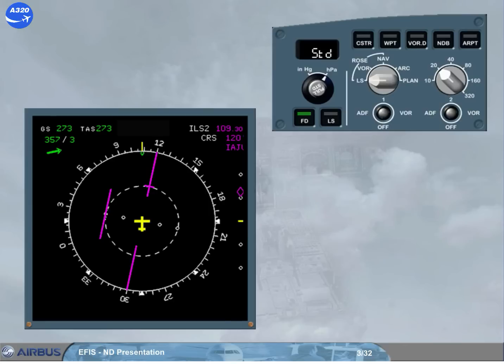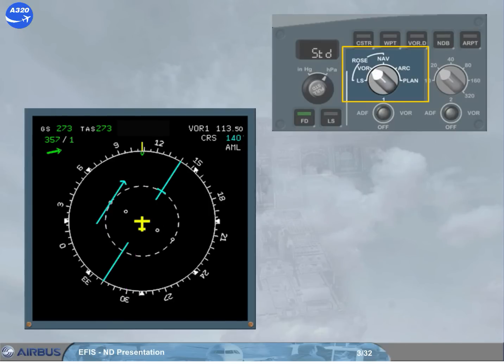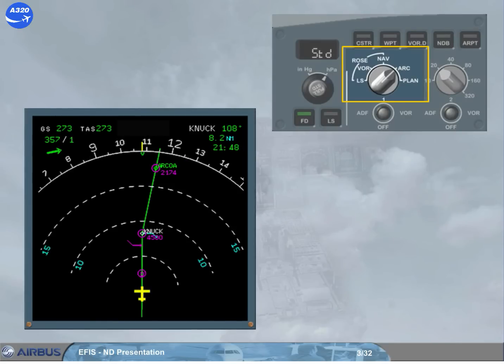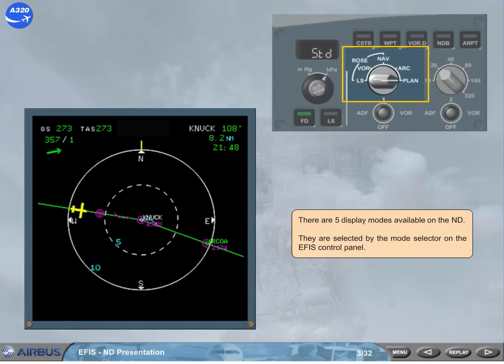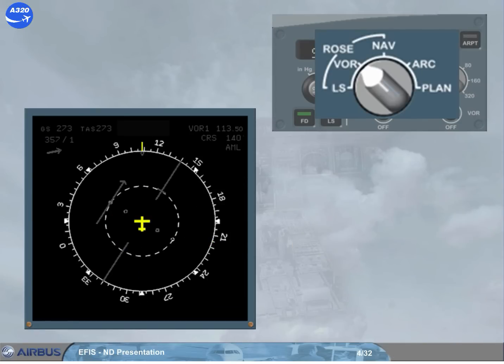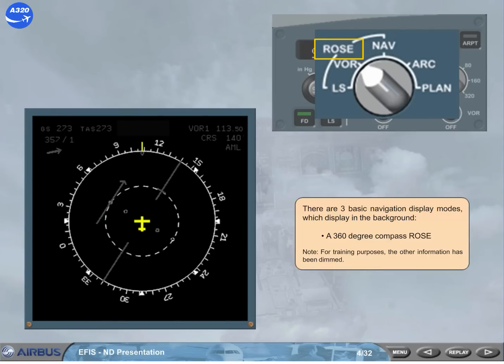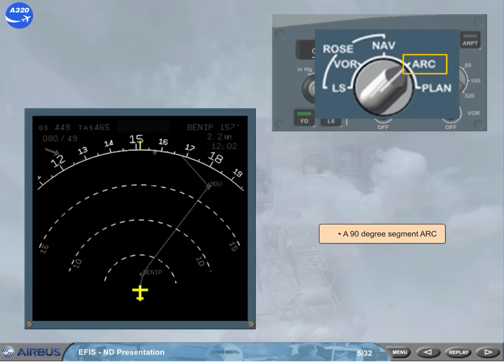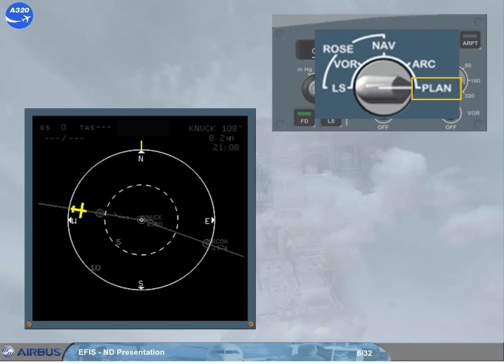There are five display modes available on the ND. They are selected by the mode selector on the EFIS control panel. There are three basic navigation display modes which display in the background a 360-degree compass rose. Note, for training purposes, the other information has been dimmed. A 90-degree segment arc. A map plan with the north at the top. Before moving on to look at the individual modes, let's quickly look at some common information.